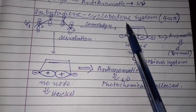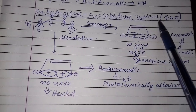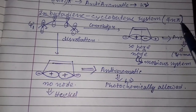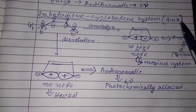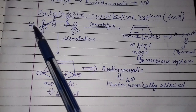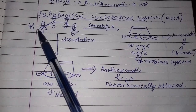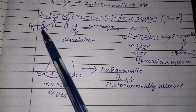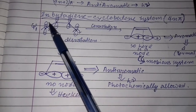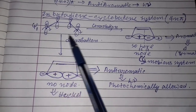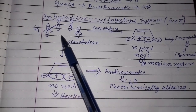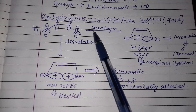Here we see the psi-1 of cyclobutadiene. This is the orbital structure of psi-1 of butadiene.